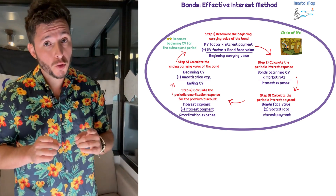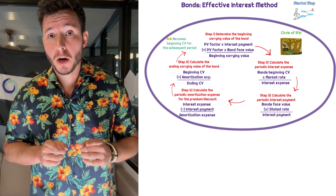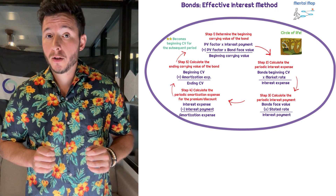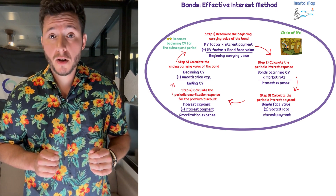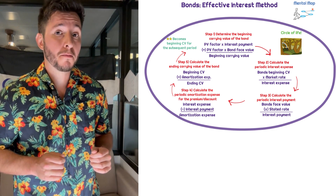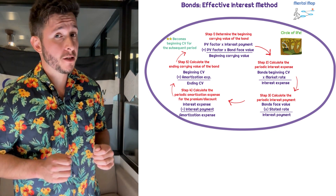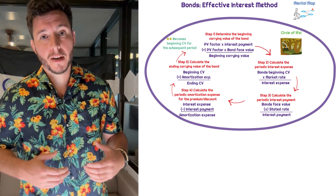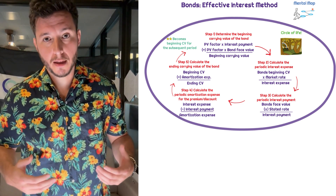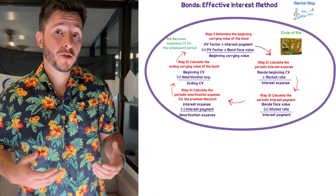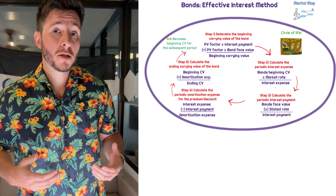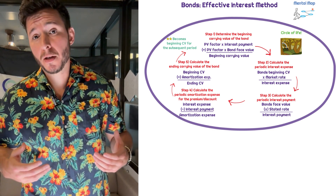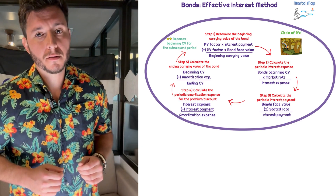On the FAR CPA exam, you need to understand bonds. When it comes to bonds, we need to know how to calculate the initial carrying value of the bond by applying present value factors, as well as the concept of the effective interest method. We're going to apply the effective interest method to amortize a bond discount as well as a bond premium.